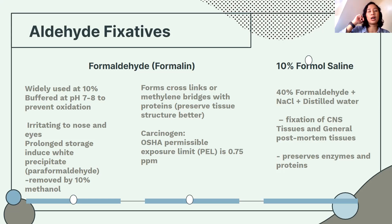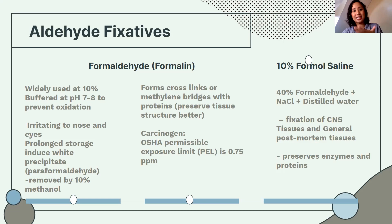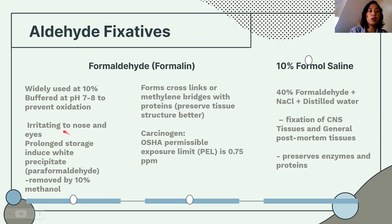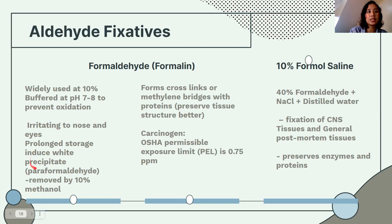The stock solution in the lab is 37% to 40%, and it is your responsibility to dilute it to 10%. It is buffered to prevent oxidation so that it does not become formic acid. According to OSHA, there is a permissible exposure limit of 0.75 ppm per work shift, because prolonged exposure can cause irritation to the nose and eyes. Formalin is carcinogenic.